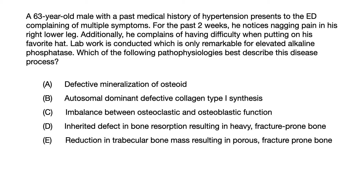The correct answer to this question is choice C: imbalance between osteoclastic and osteoblastic function. Let's look back at the clinical vignette here and see what information we were supposed to pick out in order to figure out what disease this is referring to.